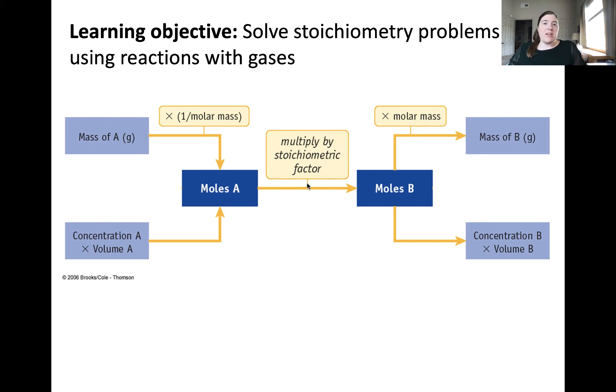The moles of one of the species of interest could be obtained either by its molar mass and the amount of that substance in grams, or for species in solution, it's possible to determine the number of moles from the solution concentration and volume via the molarity relationship. You should now be familiar with a third method to obtain moles for gas phase species if you watched the ideal gas video.